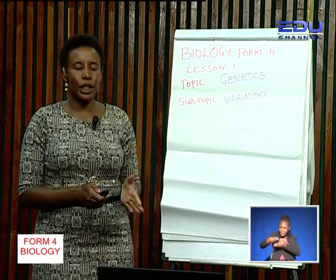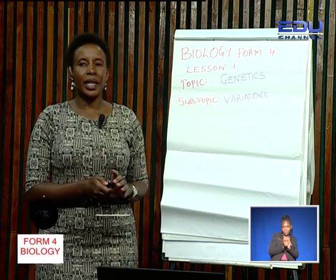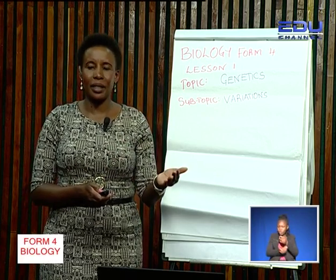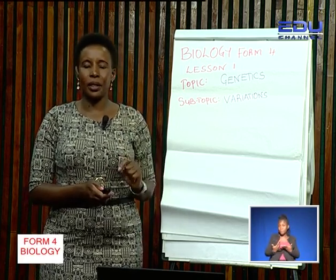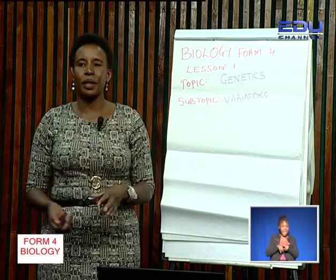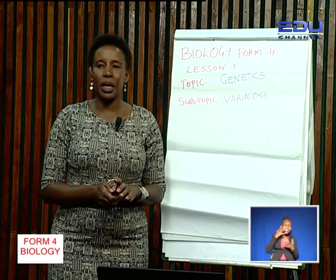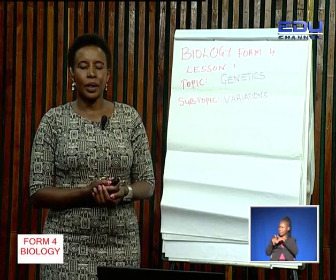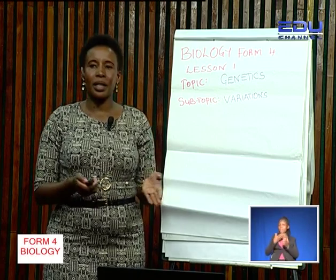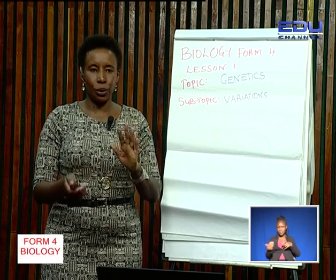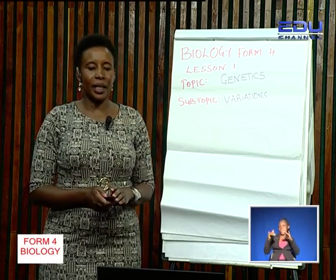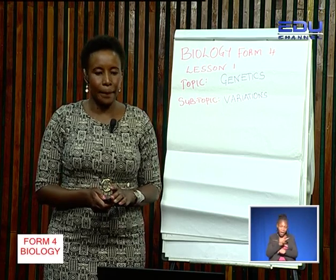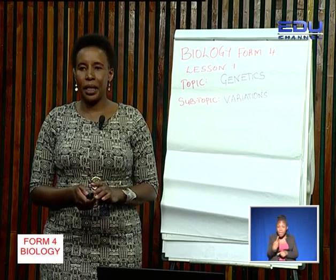Continuous variations are controlled by many genes, which are hereditary factors. They transmit inheritable characteristics from parents to their offspring. That is why even though people may belong to the same family, the offspring will differ from their parents. For example, the father may be tall and the mother short, but the offspring is in between the two parents — these characteristics are controlled by many genes.